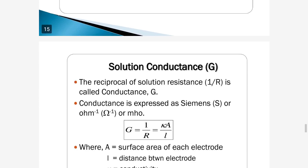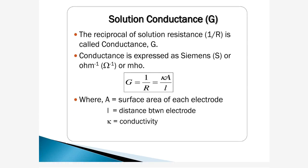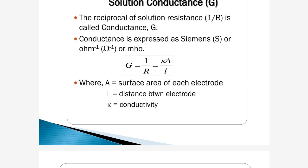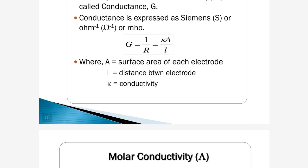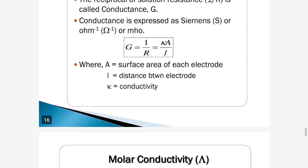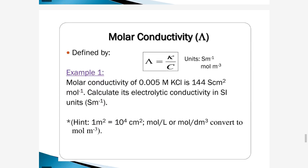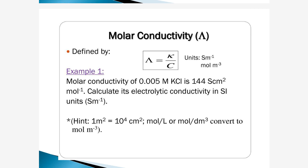Now, solution conductance G. The reciprocal of solution resistance, 1/R, is called conductance, indicated by capital G. Conductance is expressed with symbol S (siemens), or ohm⁻¹, also called mho. G equals 1/R equals κ·A/L, where A is the surface area of each electrode, L is the distance between electrodes, and κ (kappa) is conductivity. Molar conductivity, capital Λ, is defined by Λ equals κ/C, with units of siemens per meter per mole.